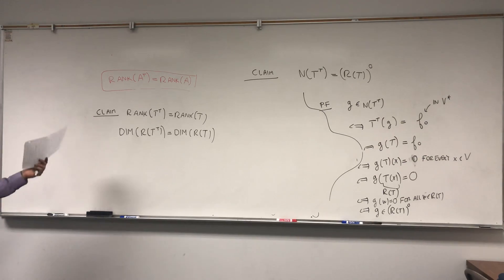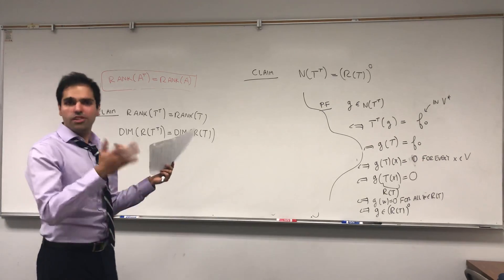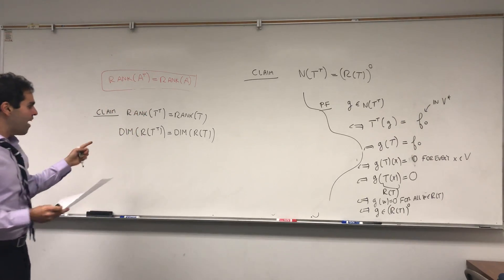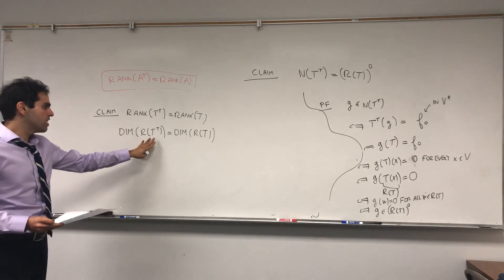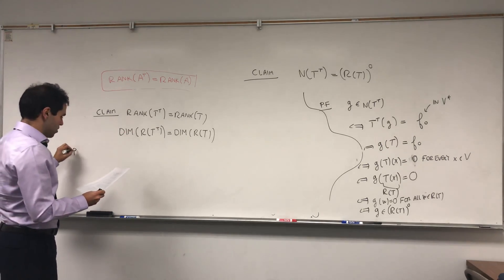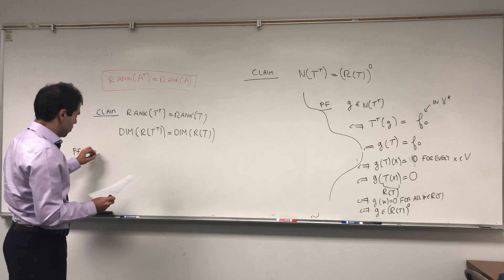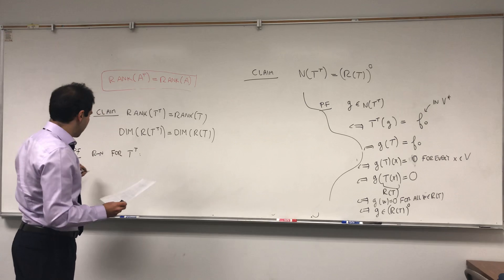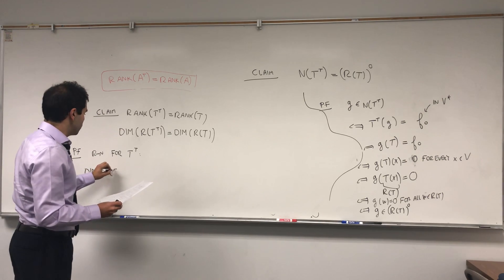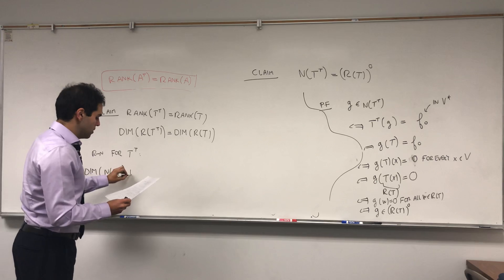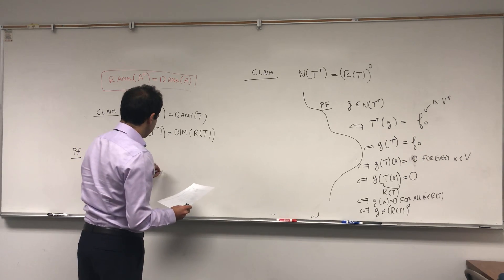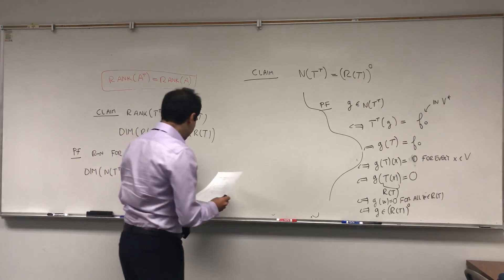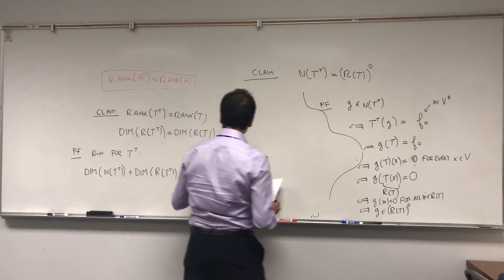And, well, as I told you, this identity should remind you a bit of the rank-nullity theorem. And, in fact, we can apply the rank-nullity theorem to T transpose. So, by rank-nullity theorem for T transpose, we get that the dimension of the null space of T transpose plus the dimension of the range of T transpose, which is what we have here, equals to the dimension of what? Well, remember, T transpose goes from W star to V star.